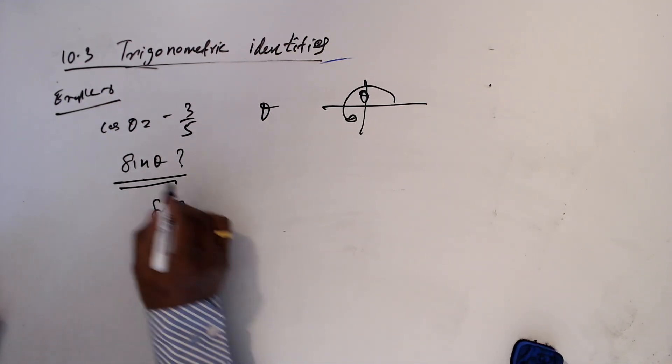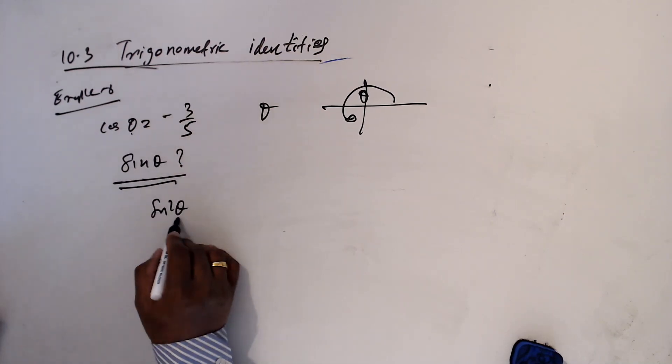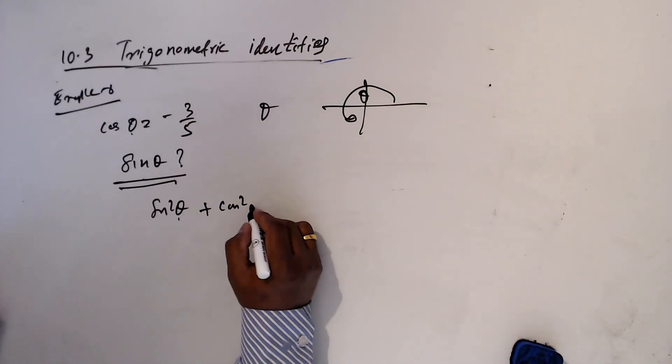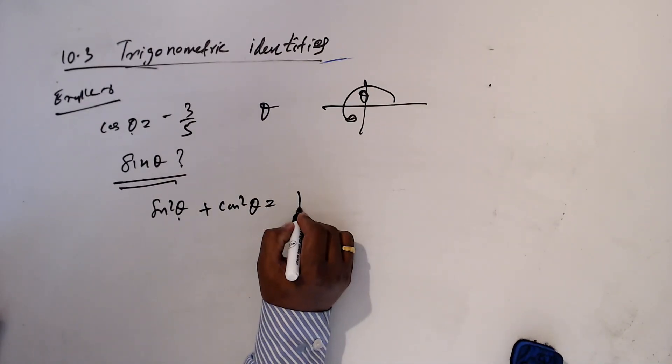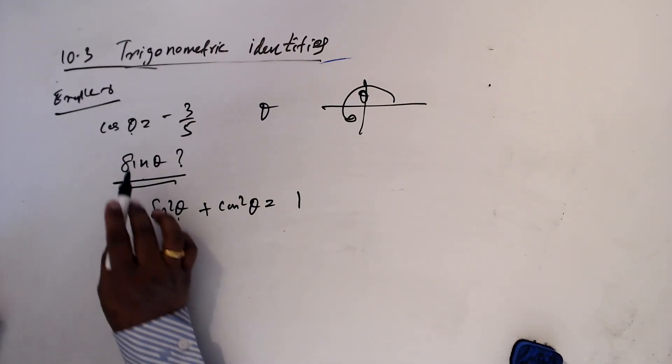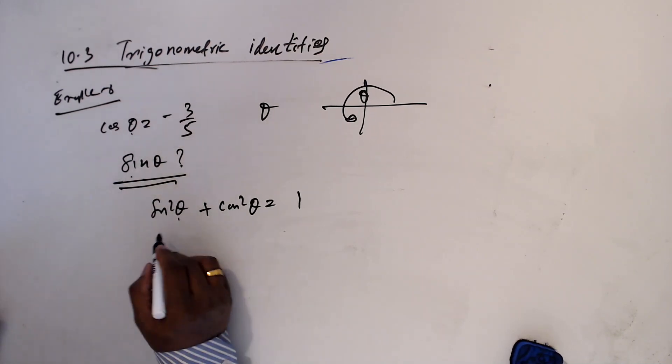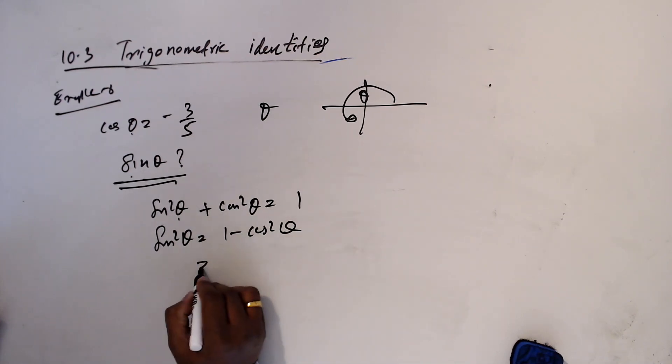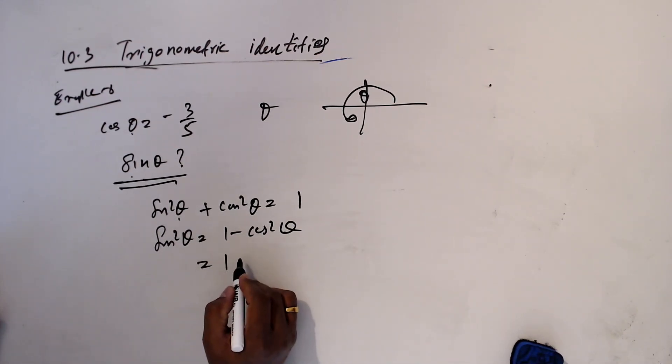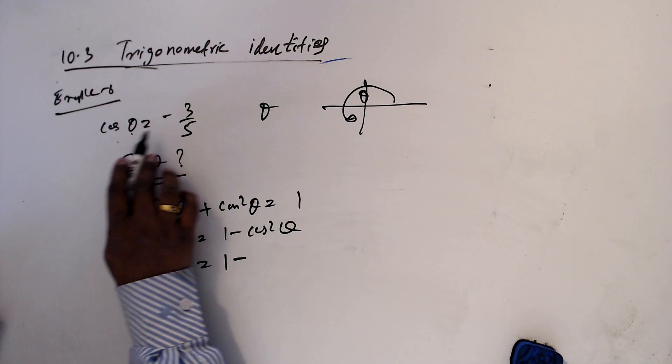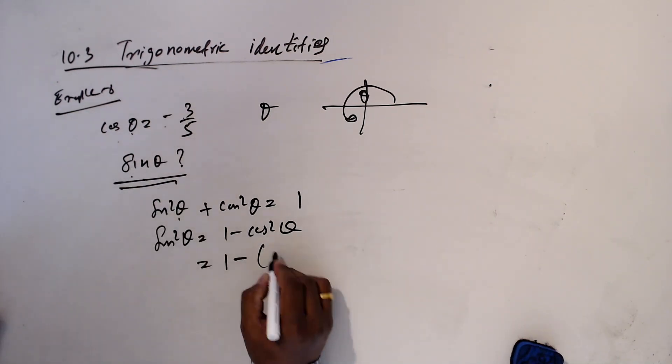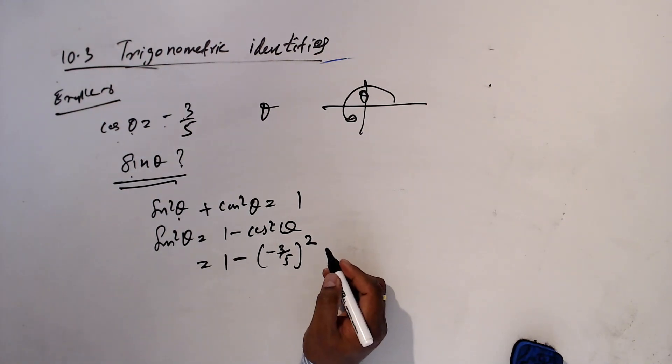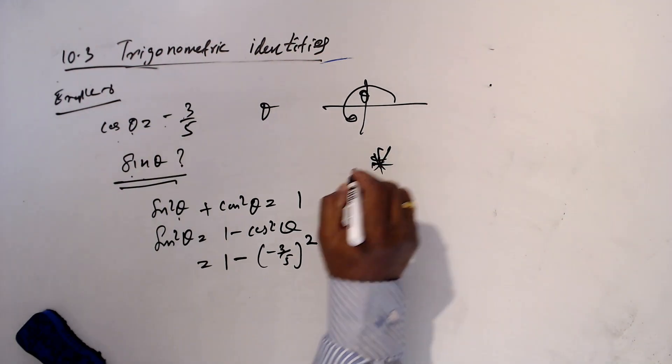Sine square, if it is theta, we have to use theta. If it is alpha, alpha. Cos square theta equal one. Then I need sine theta, so sine square theta I'll find one minus cos square theta. One minus, what is cos theta? Minus 3 over 5, so minus 3 over 5 and square. Actually very important fact I will discuss.